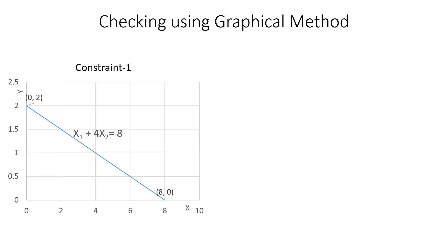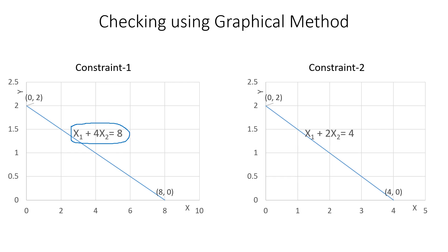Now let's verify this using the graphical method. First, we change the inequalities to equalities and plot the intercepts on the XY plane. For the first constraint, we get one line, and for the second constraint, another line. Since the constraints are less than or equal to, we shade the corresponding regions toward the origin.